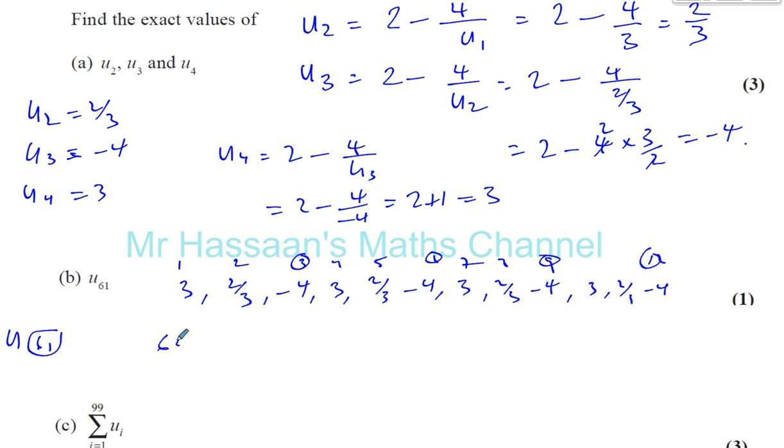So the 60th term is going to be negative 4. And the term after negative 4, each time, is a 3. So that means U61, it's going to be 3. That's one way of deducing that, just by looking at the pattern of how the numbers repeat. The multiples of 3 will all be minus 4, and always one more than that is the 3. The number 3 is always after the minus 4 in this sequence.